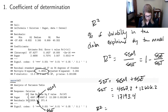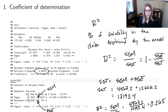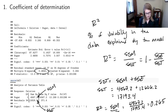We know R squared can be computed as SSM over SST. In this case, that's 4567.2 out of 17193.4, which comes out to about 0.265. That's one thing I might ask you on an exam — given an ANOVA table, tell me what percent of variability in the data is explained by the model.